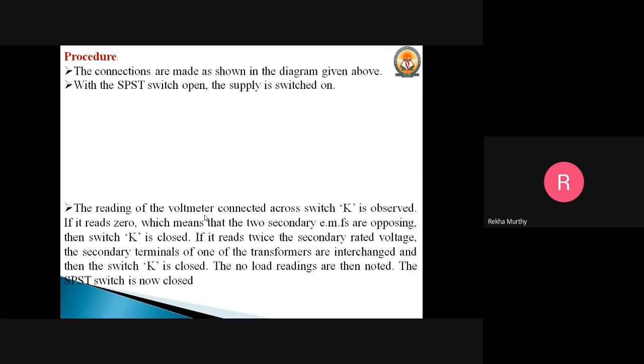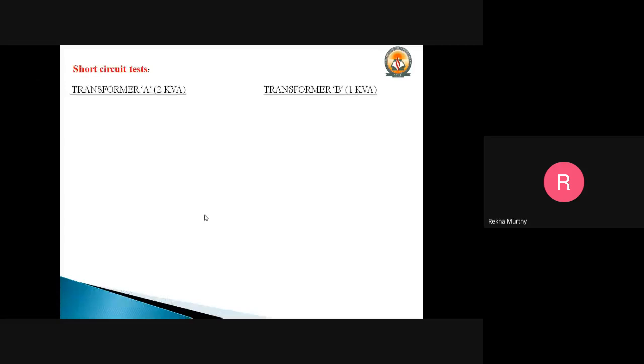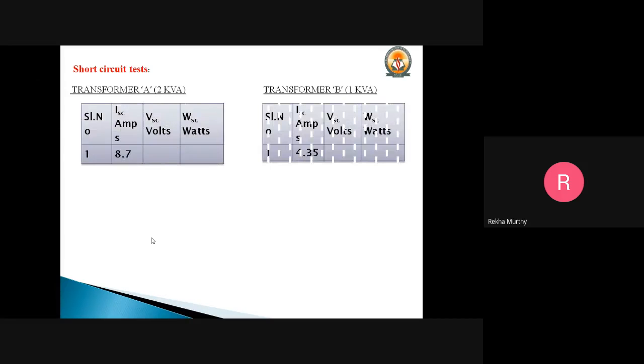What will be the readings which you are going to take from the short circuit test? One transformer will be 2 kVA and another transformer will be 1 kVA. For the 2 kVA, the rated current is 8.7 amperes. This is the same value which you will get as what we did in OC and SC test as the first experiment.